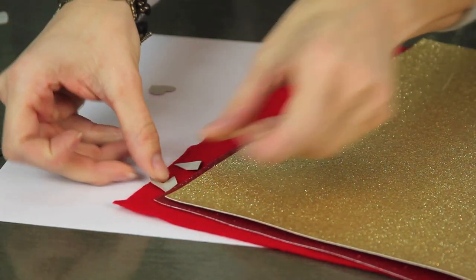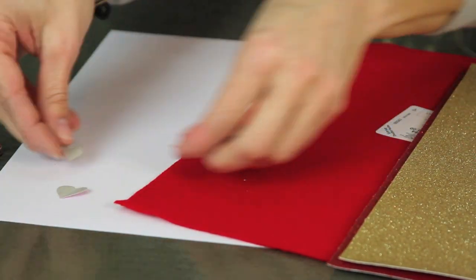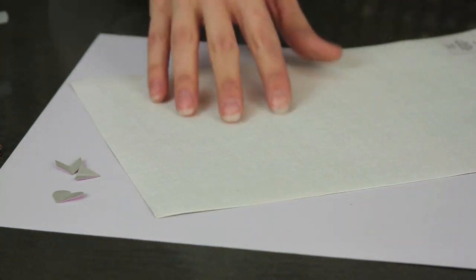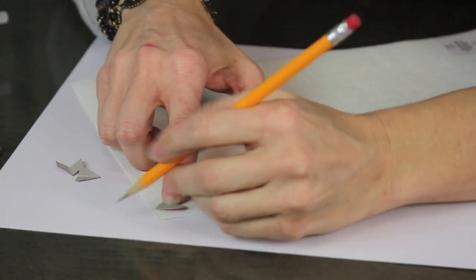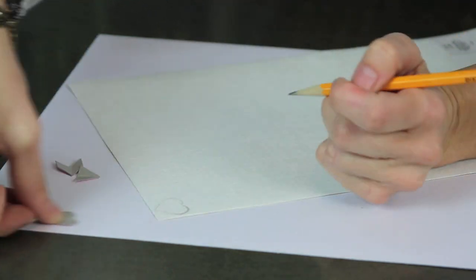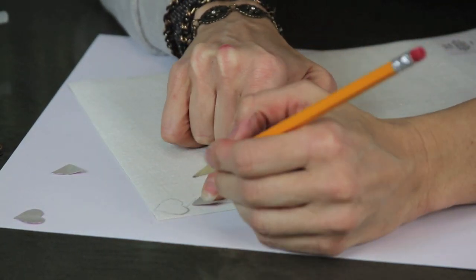First you just need to cut out the shapes, the three shapes that you need for your bobby pin which is gonna be a heart, a tip, and the feather part of your arrow. And if you guys don't feel comfortable drawing your own patterns, I will put those up on the blog and you can just print those out and you're just gonna trace them on the back of your felt and just cut those out.